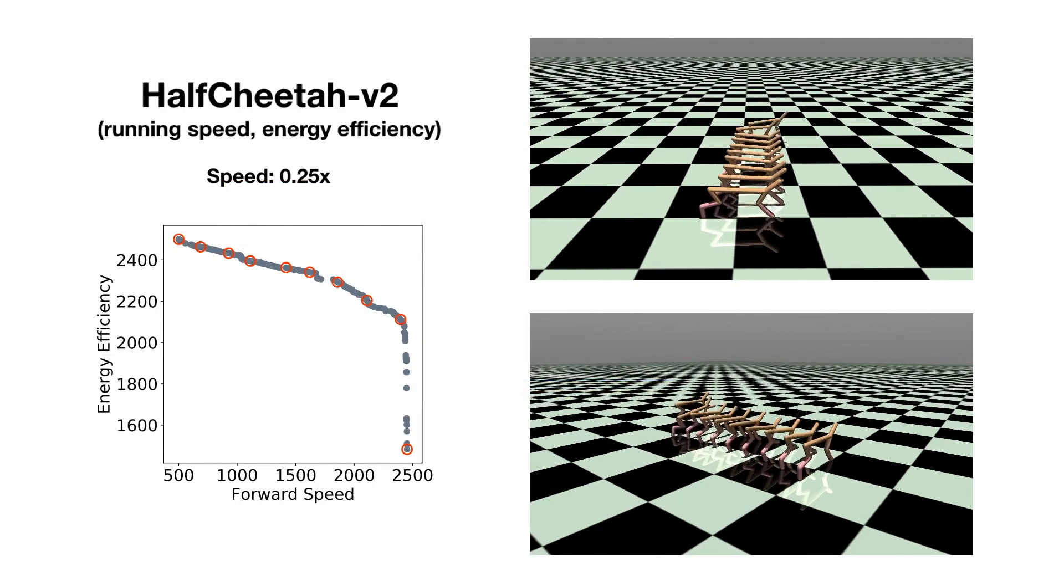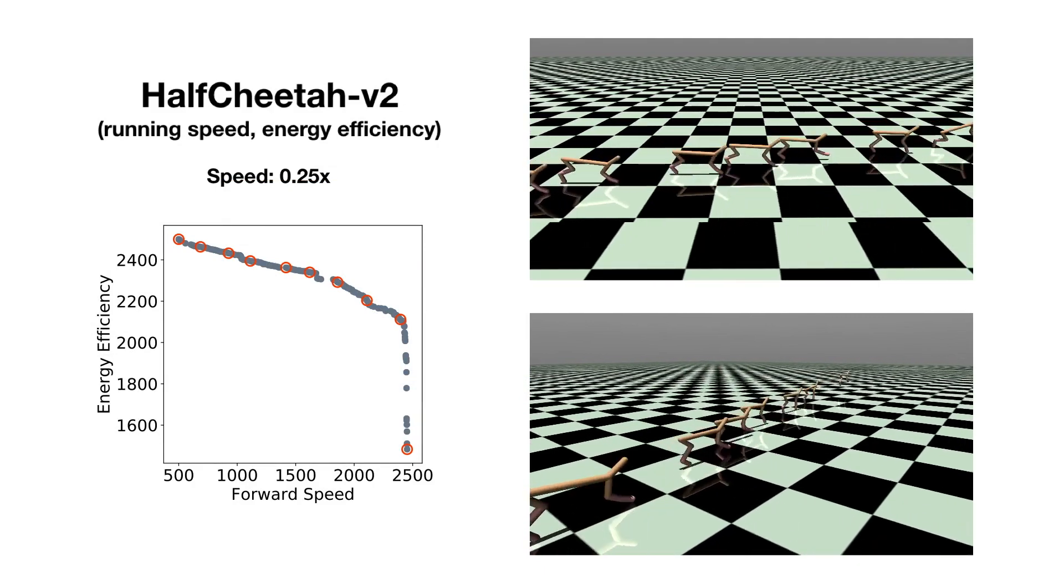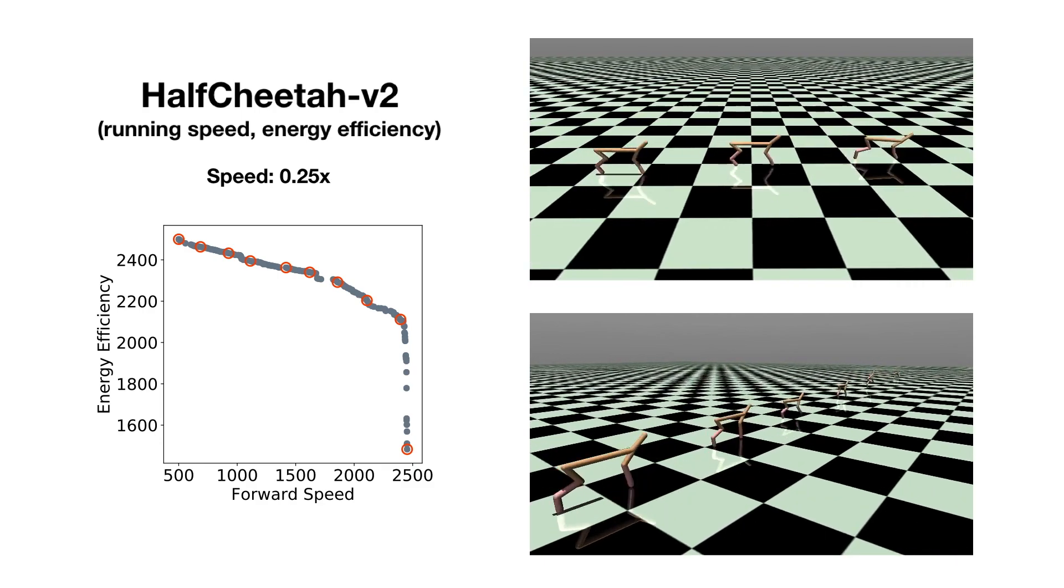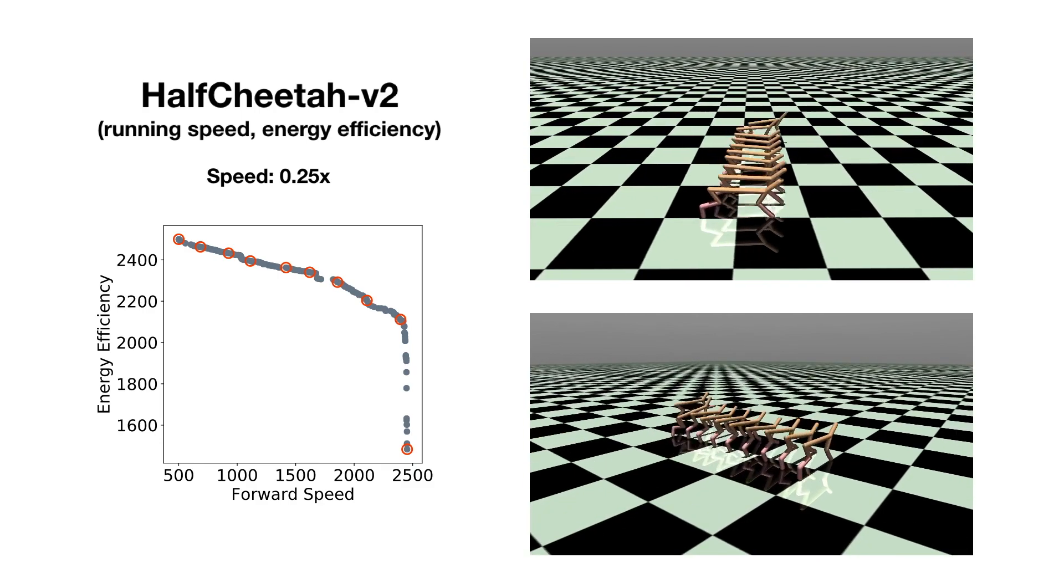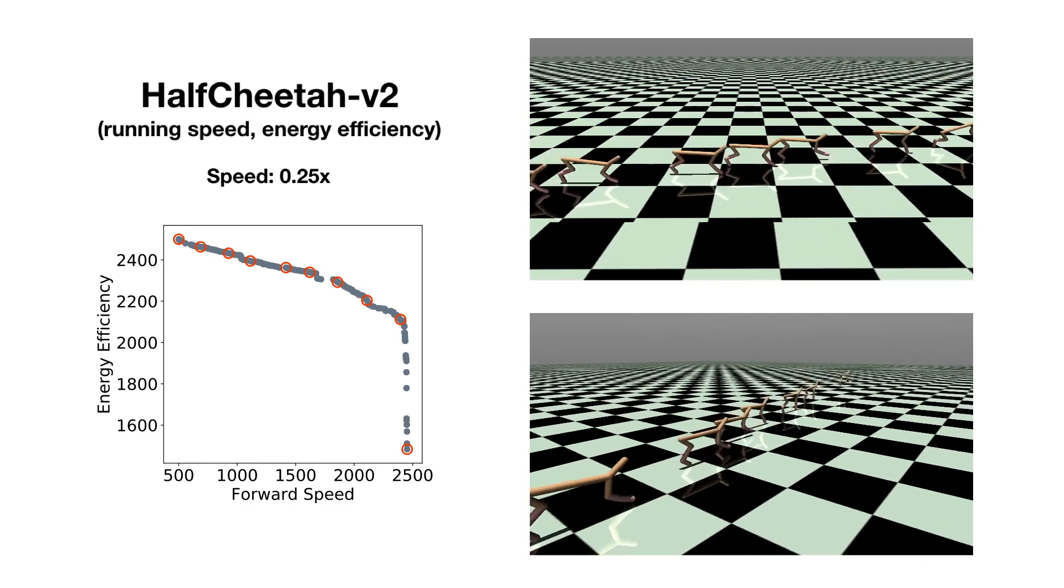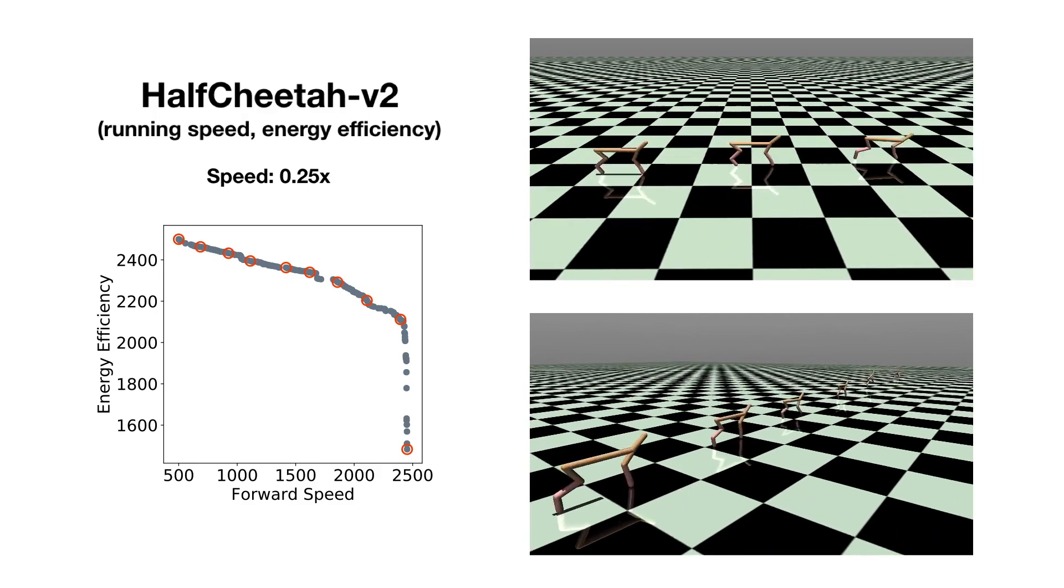We demonstrate the Pareto-optimal policies learned by our algorithm. For half-cheetah, the first objective is running speed and the second is energy efficiency. We show 10 different policies on the Pareto front for different preference trade-offs, from the fastest to the most energy efficient.